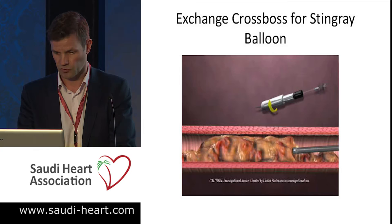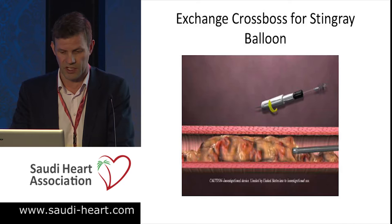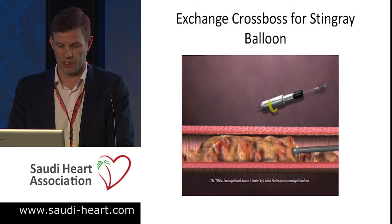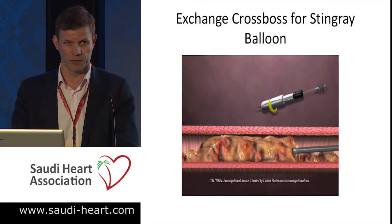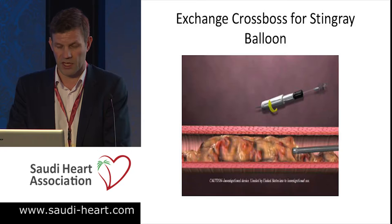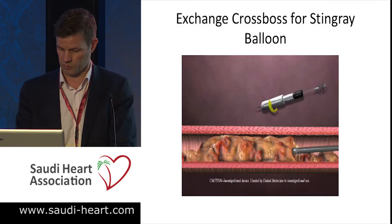Here's a cartoon showing the CrossBoss entering into the sub-intimal space. We park a Miracle 12 wire to support delivery of the Stingray system. When the Stingray is in place at the point where we want to re-enter — and this is the specific advantage of the Stingray — we can choose the re-entry point. We inflate the balloon, which wraps around the artery, then bring our wire down under fluoroscopy, select our point depending on which way the wire goes, rotate it, and push into our re-entry position. You feel a very distinctive pop when this occurs.